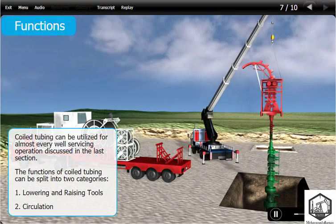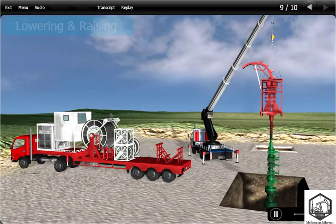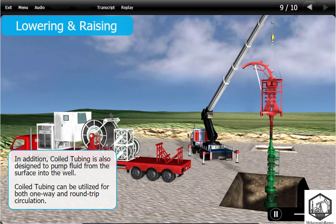Coiled tubing can be utilized for almost every well servicing operation. The functions of coiled tubing can be split into two categories: first, lowering and raising tools; and second, circulation. Coiled tubing is designed to raise and lower objects into the well under pressure. Even if a well is live with pressure at the wellhead, a coiled tubing unit is designed to successfully lower or raise objects. In addition, coiled tubing is also designed to circulate fluid from the surface into the well, and can be utilized for both one-way and round-trip circulation.